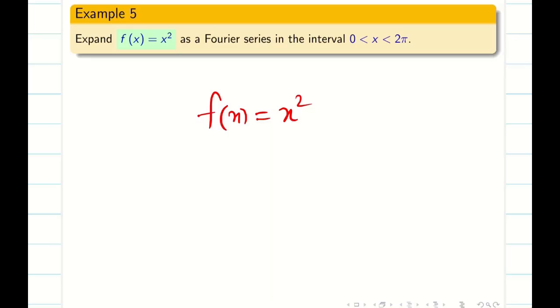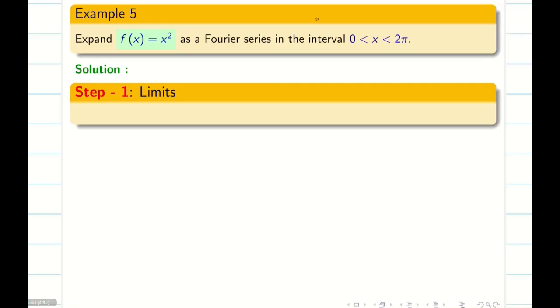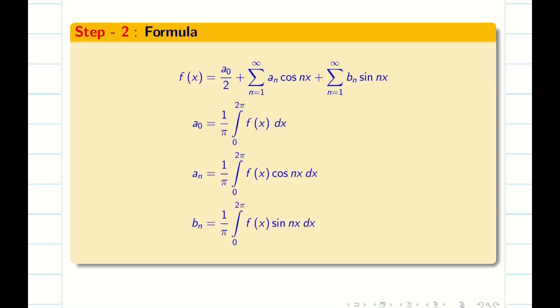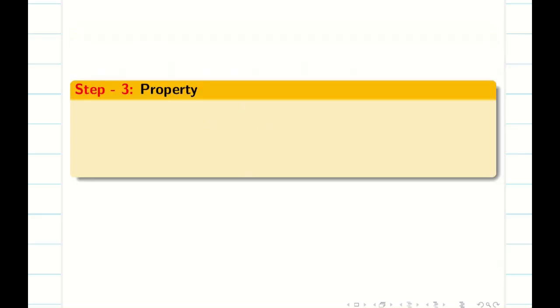My function is x square under the interval 0 comma 2π. As I said, we go systematically, write the steps. Step 1: my limits given, f of x is equal to x square at the interval 0 comma 2π. Next, obviously step 2, we are going to write the formula f of x, a naught, a n, and b n. Once you write this, now we have to think about step 3.